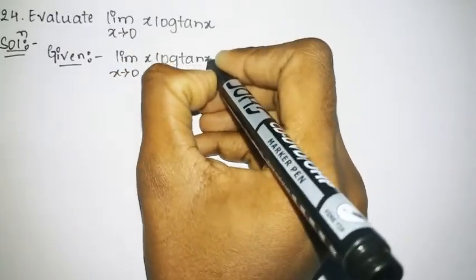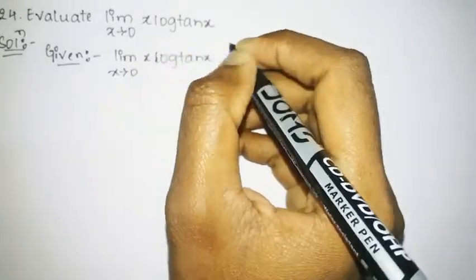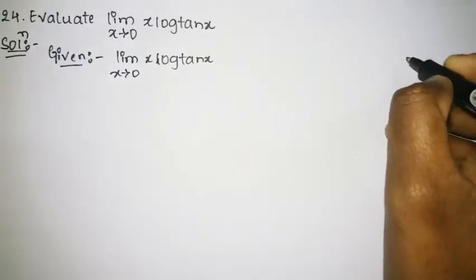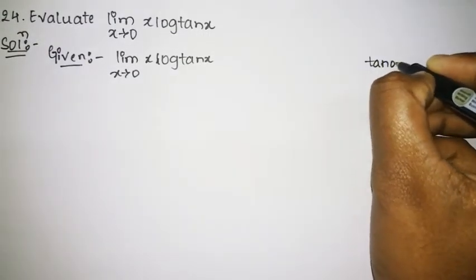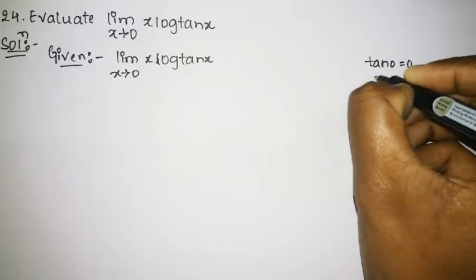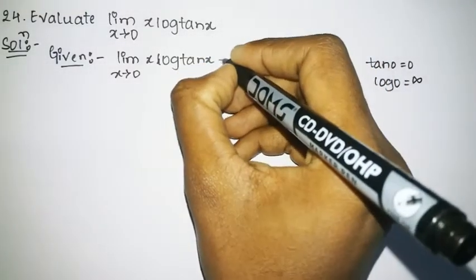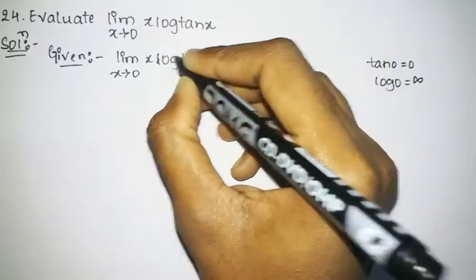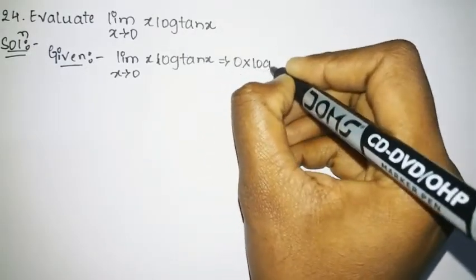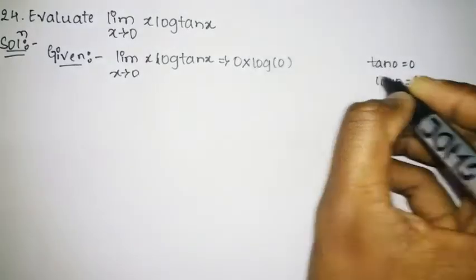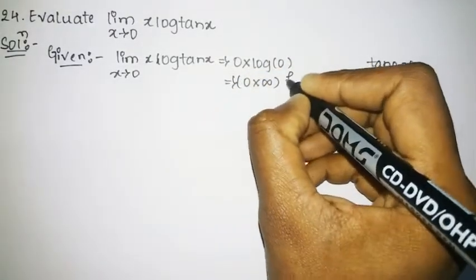Our first step is to check the form by substituting the limit as x tends to 0. As we know, tan 0 is 0, and log 0 is infinity. So substituting, we get 0 into infinity, which gives us the 0 cross infinity form.